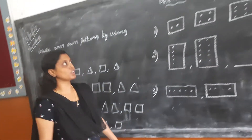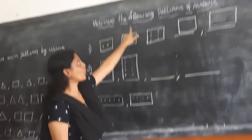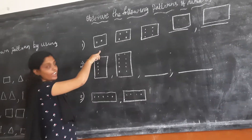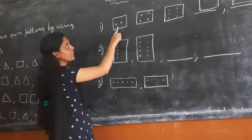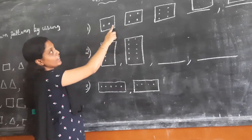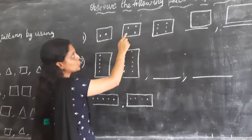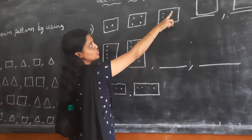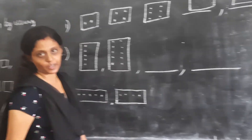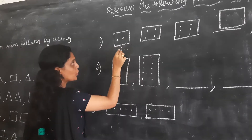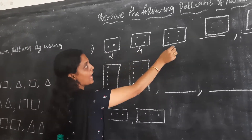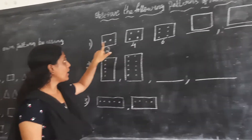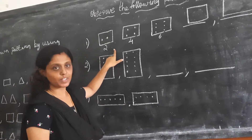The next topic we are going to learn is: observe the following patterns of numbers. By observing the first one, here two dots are there. In this box, four dots are there. In the third box, six dots are there. So the sequence is: two, four, and six. Here, two is added each time.